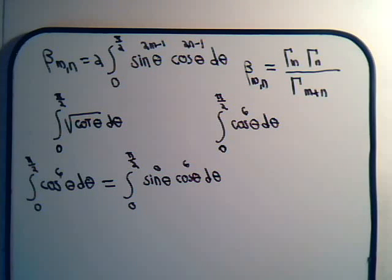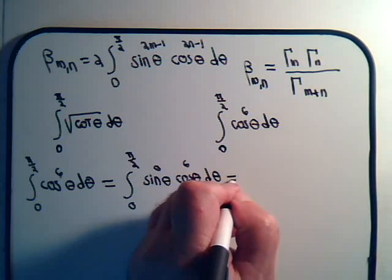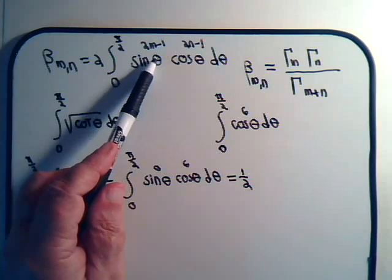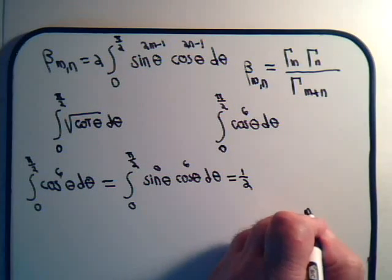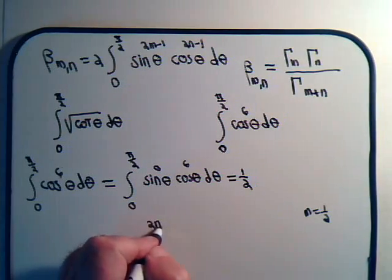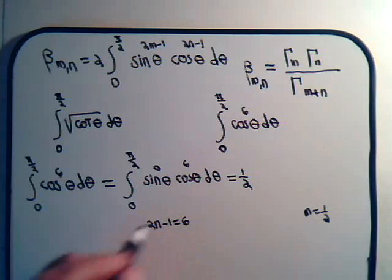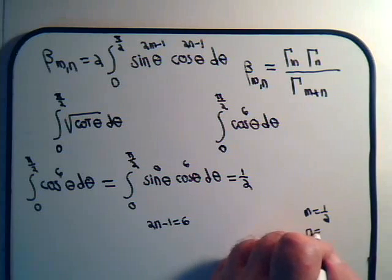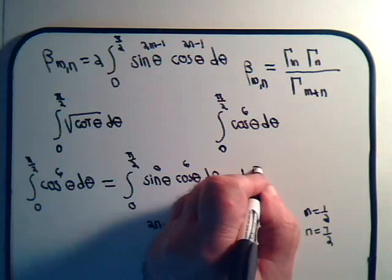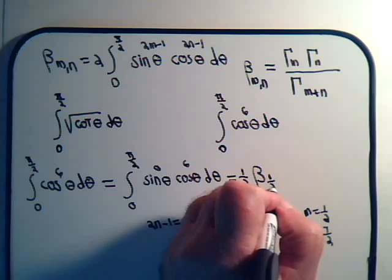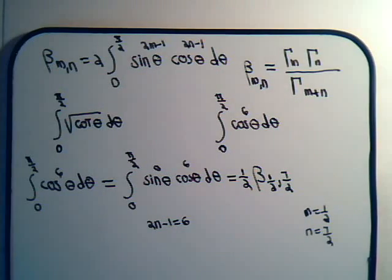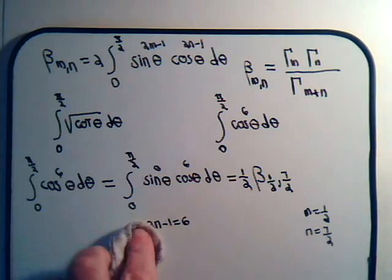We set 2m minus one equal to zero, giving m equals one-half. And 2n minus one has to equal six, so 2n equals seven, meaning n equals seven-halves. So this integral equals one-half times B(1/2, 7/2) — again a pretty straightforward application.